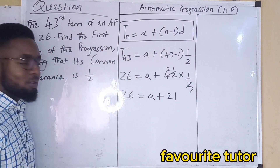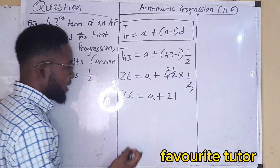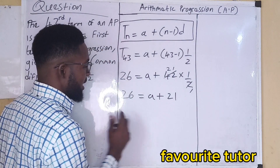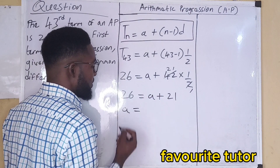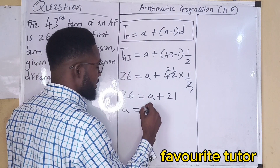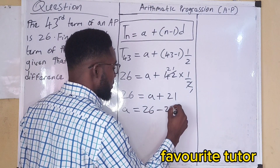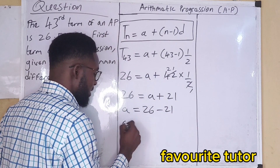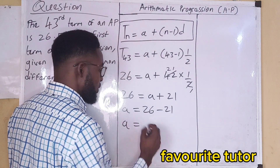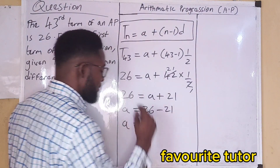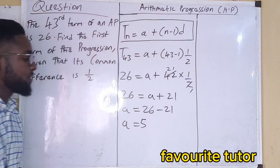Collecting like terms, A would be equals to 26 minus 21. A is equals to 5.